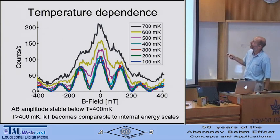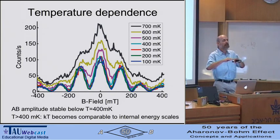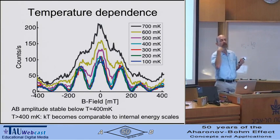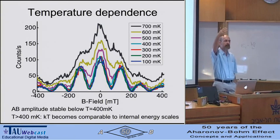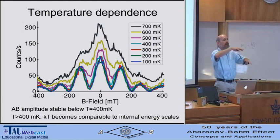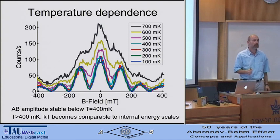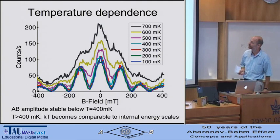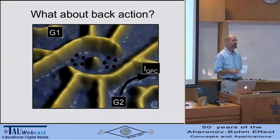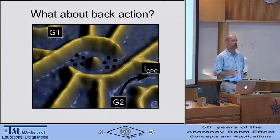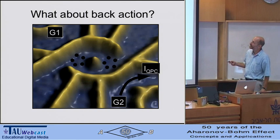At even higher temperatures, like 500 millikelvin or higher, kT becomes comparable to the internal excitations of the system. This means additional possibilities to go through the system—not only through the ground state but also through excited states. The excited state has a different phase, so different Aharonov-Bohm oscillations average out. The fact that the oscillations wash out at high temperature is not due to decoherence, but to averaging of different Aharonov-Bohm signals. The Aharonov-Bohm effect is a very nice tool to learn about the measurement process in a quantum system.